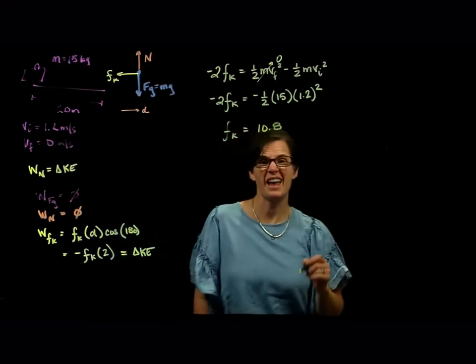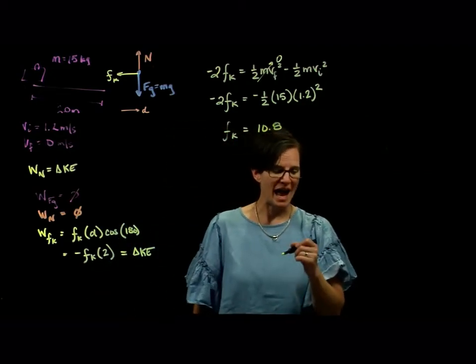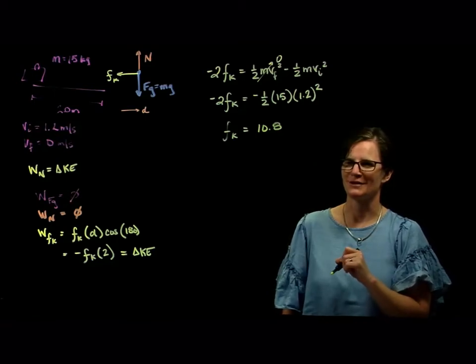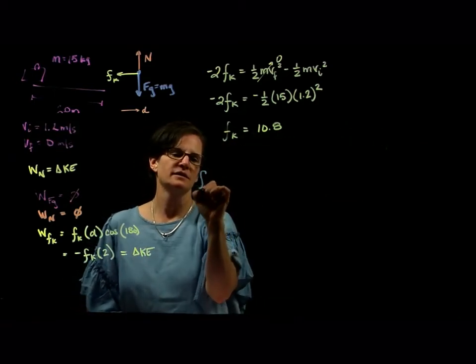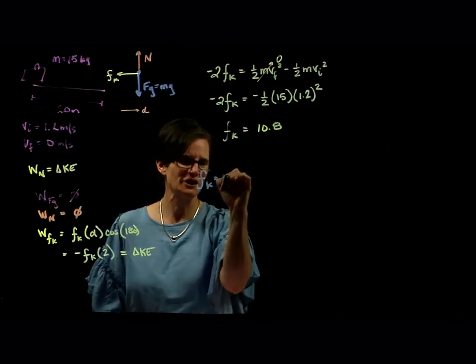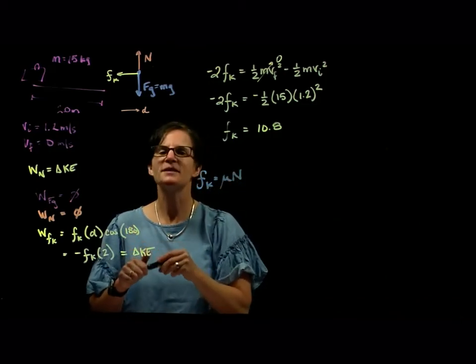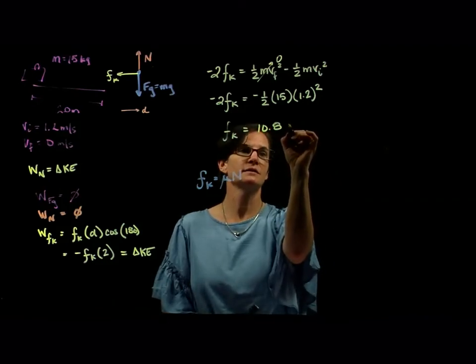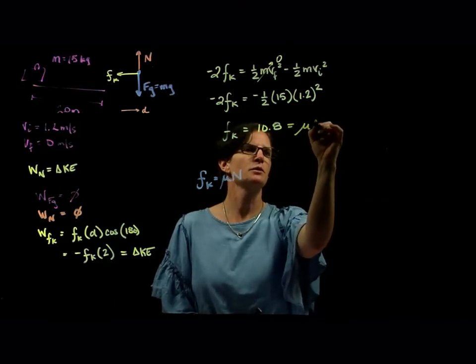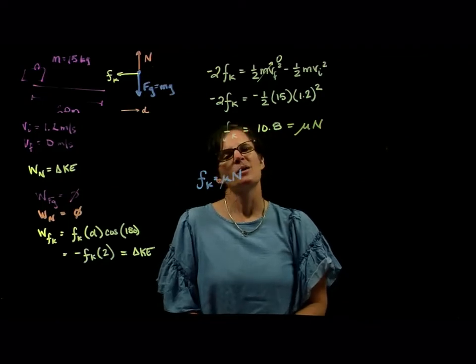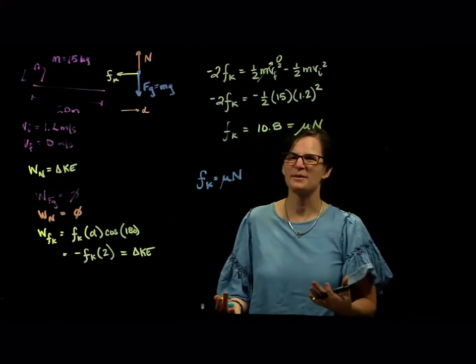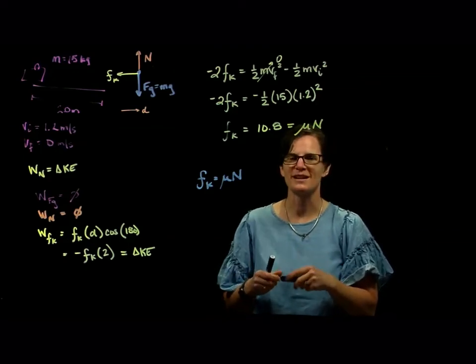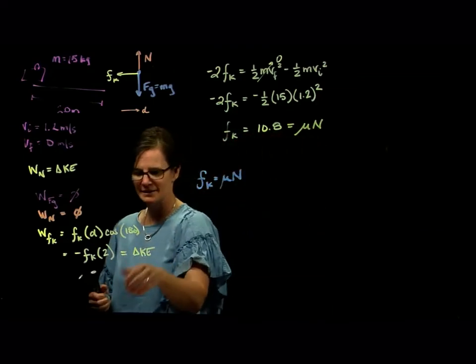All right, now we're not asked for the force of friction. We're asked for the coefficient. So we want to keep in mind that the force of friction is equal to mu times n. So our 10.8 newtons is equal to mu times n. Well, we aren't given n. So to solve for that force n, we do have to do a small force analysis.